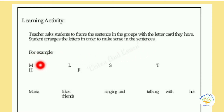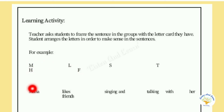For example, with letters M, L, S, T, H, F — from M someone writes 'Maria', then L for 'likes', F for 'friends', S for 'singing', T for 'talking', H for 'her'. Then make a sentence: 'Maria likes singing and talking with her friends.'